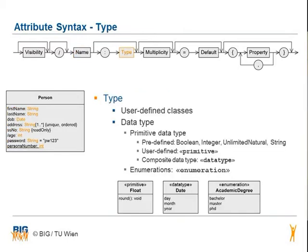The attribute type can consist of a user-defined class or a data type. The predefined primitive data types boolean, integer, unlimited natural, and string are available without modeling them explicitly.